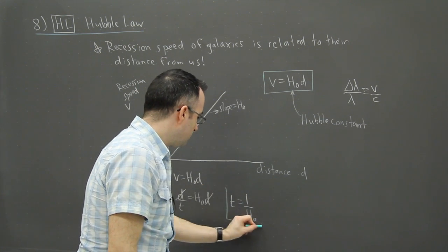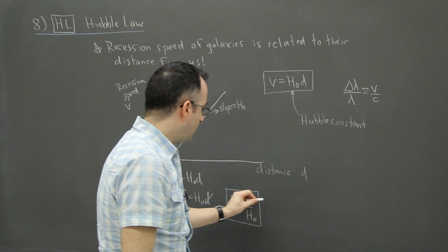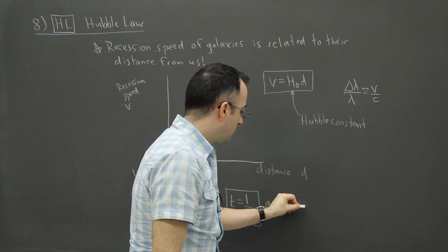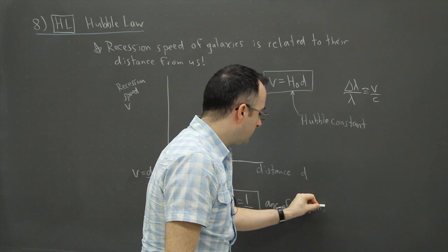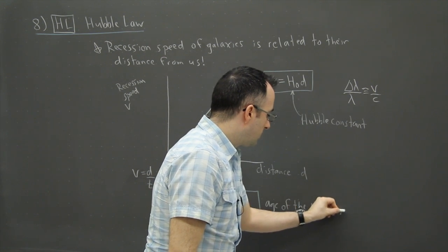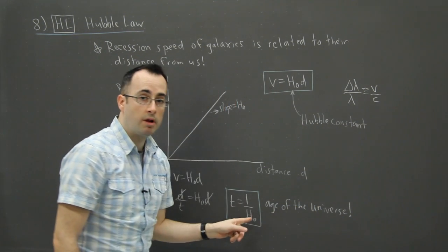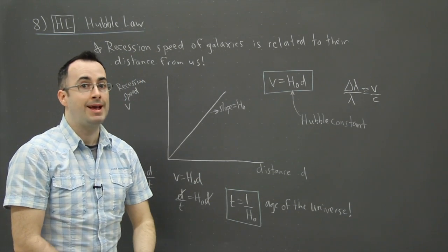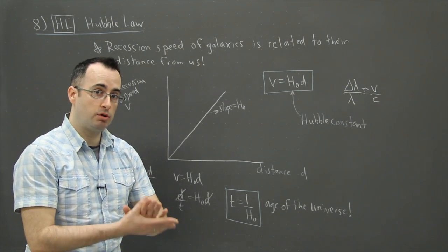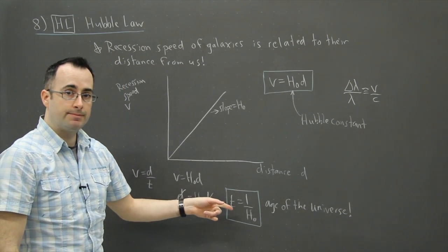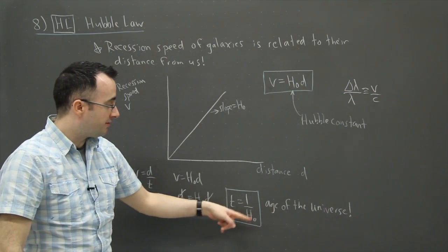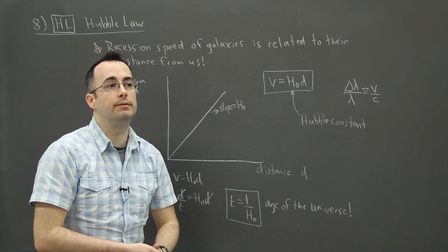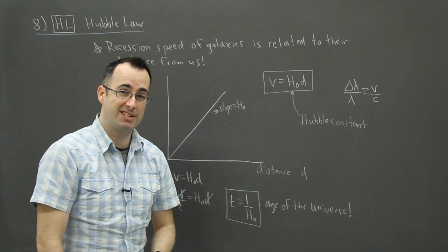This is really cool because this is the age of the universe. That's what this T is. So if you know what the Hubble constant is, then doing one over the Hubble constant, as long as you're really careful with your units, then you get the age of the universe. It all depends on what you want to convert to because you can get the age of the universe in years or in minutes or in seconds. It's just a matter of converting.